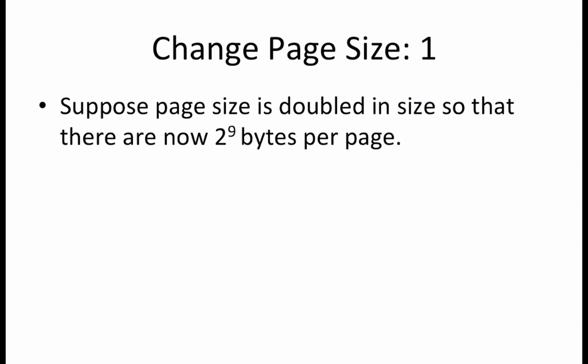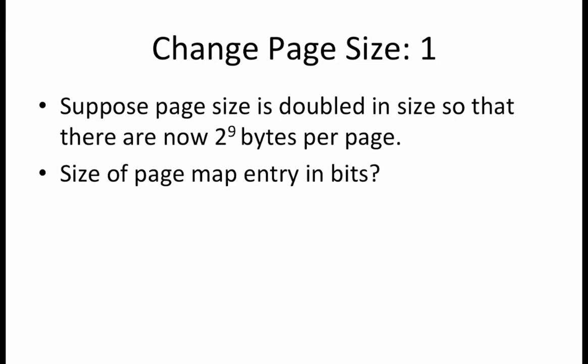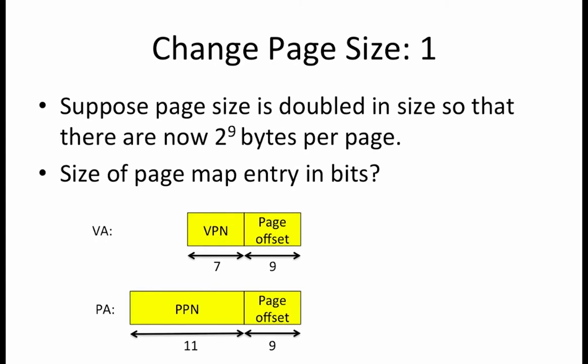Suppose that you are told that the page size is doubled so that there are now 2 to the 9 bytes per page, but the size of your physical and virtual addresses remain the same. We would like to determine what effect this change would have on some of the page map attributes. The first question is, how does the size of each page map entry in bits change? Since the size of a physical address continues to be 20 bits long, the change in page offset size from 8 to 9 bits implies that the size of the PPN decreases by 1 bit from 12 to 11. This implies that the size of each page map entry also decreases by 1 bit.